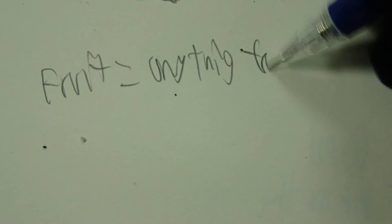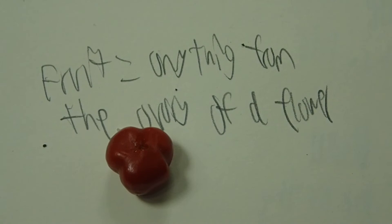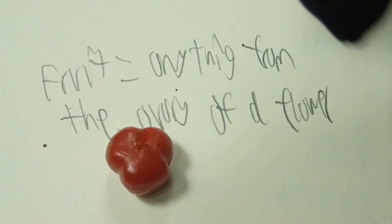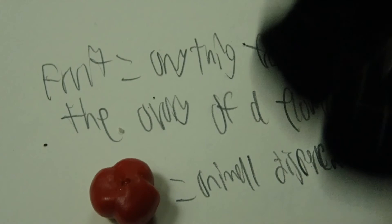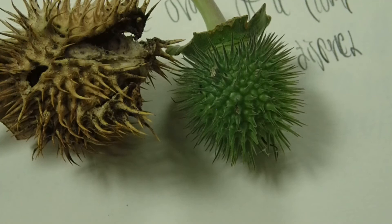Now that the flowers have been explained, we can move on to fruits. Fruit equals anything from the ovary of a flower. This jelly pepper here is a fairly typical example of a fruit — animal dispersed. However, these two fruits at various stages of ripening are from the plant Datura, which is a relative of the chili pepper, but they are decidedly not edible. They're covered in spiky bits, they taste rather terrible, and they are extremely poisonous — eating one would shut your organs down, so don't do that.